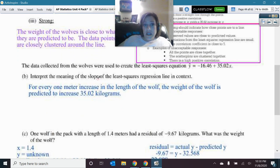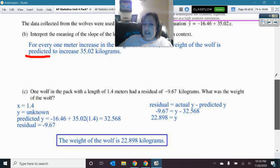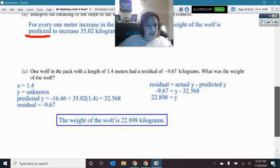Interpret the meaning of the slope. For every 1 meter increase in the length of the wolf, the weight of the wolf is predicted to increase. Don't forget you're predicted to increase this many kilograms. For every 1 increase in the X. That was your slope. The predicted Y. It does this. Interpret the slope. Okay.